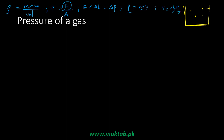We start with pressure equals force over area. We consider a cube-shaped container where the length of all sides is L, containing a total of n molecules each of mass m. We consider one molecule — molecule number one — moving only in the x-direction. It travels from one corner to the other and comes back, covering a total distance of 2L.